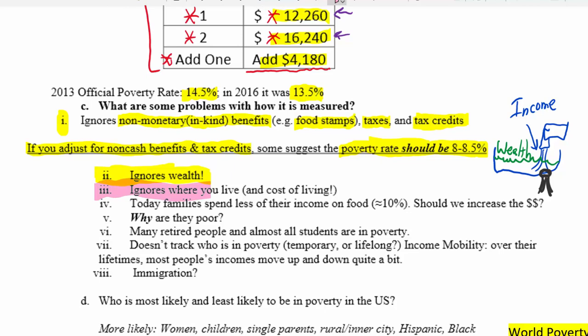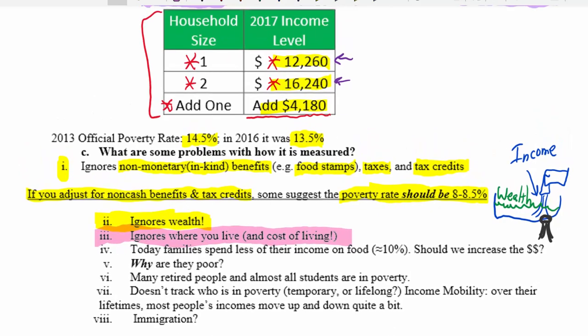Another thing the income limits ignore is where you live. We do have a separate table for people who live in Alaska and Hawaii, but this ignores the fact that living in New York City — especially Manhattan — costs at least twice as much as just about anywhere else in the United States, except perhaps San Francisco and some parts of California. If we ignore that money can buy much more in some places than others, that's a significant problem with how we define who is in poverty.